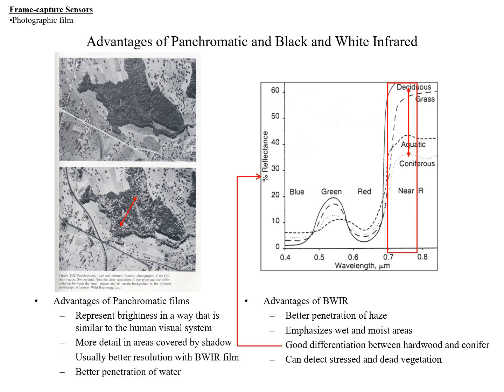Black and white infrared provides good differentiation between hardwood and conifer areas, and it can detect stressed and dead vegetation. Hardwood refers to broadleaf trees and conifers to needle-leaf trees. The relationship between the spectral signatures of deciduous and coniferous vegetation on a plot of wavelength versus reflectance explains why that distinction is visible in the image. We often go back and forth between a spectral signature and how things appear in the image.